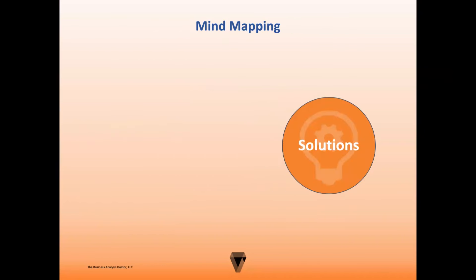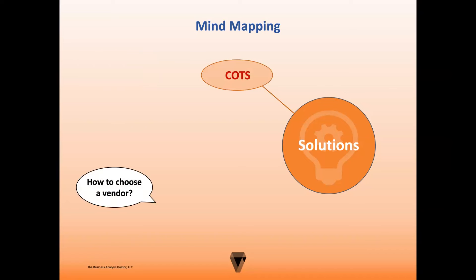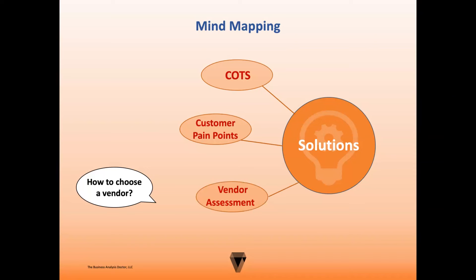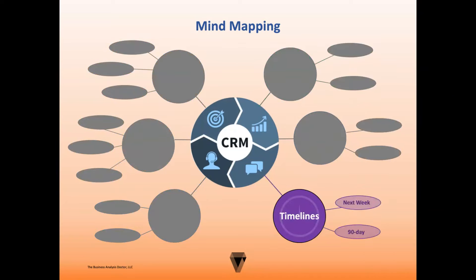Finally, we'll look at the solutions node. Here, we'll ask questions related to how to achieve the goals — so you might ask something like, 'How to get the CRM?' Typically, these will be questions regarding whether we'll build the solution internally or purchase a solution from a vendor. Let's say the team decides that the budget and time frame allows for a commercial off-the-shelf product, so we'll use COTS as our keyword. Then you may ask how we'd go about choosing the vendor for the COTS CRM. The team may decide to first identify the customer pain points and then perform a vendor assessment to see which vendor offers a COTS solution optimal for addressing these pain points. Here is your project mind map for implementing a CRM application, providing a high-level overview of the entire project while the color coding allows you to quickly associate the topics and subtopics.